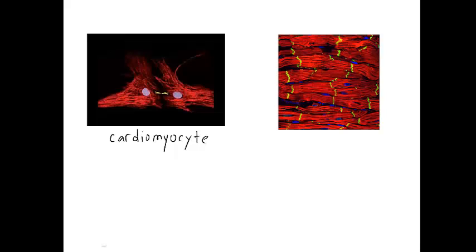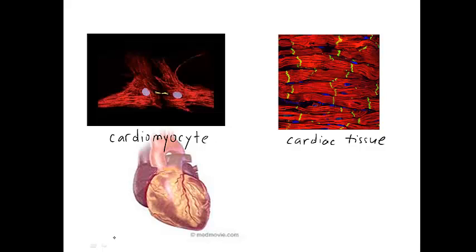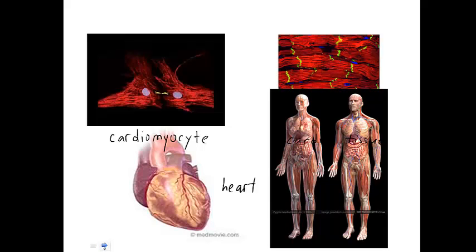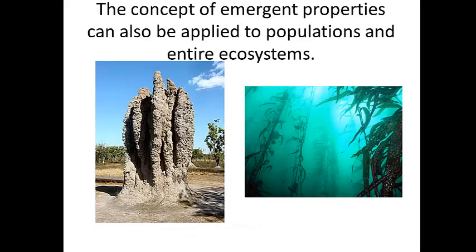A biological example: this is a cardiomyocyte — cardio for heart, myo meaning muscle, cyte meaning cell — a heart cell dividing into two. Is this cell alive? By our definition of living, it meets all the criteria, so yes. But it's pretty useless all by itself. It needs a whole bunch of cells working together to make a tissue, and that tissue needs to be combined with other types of tissue to make an organ — the heart. That organ would be part of an organ system, the cardiovascular system, which links with other systems to make a living organism. The concept of emergent properties can apply within one organism, but also to populations and entire ecosystems.